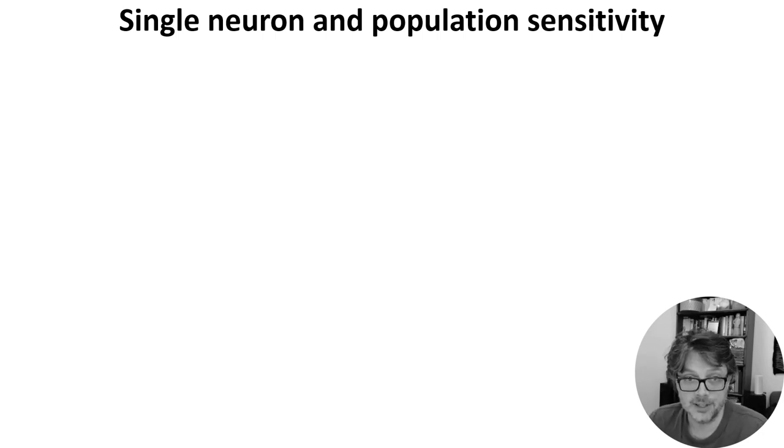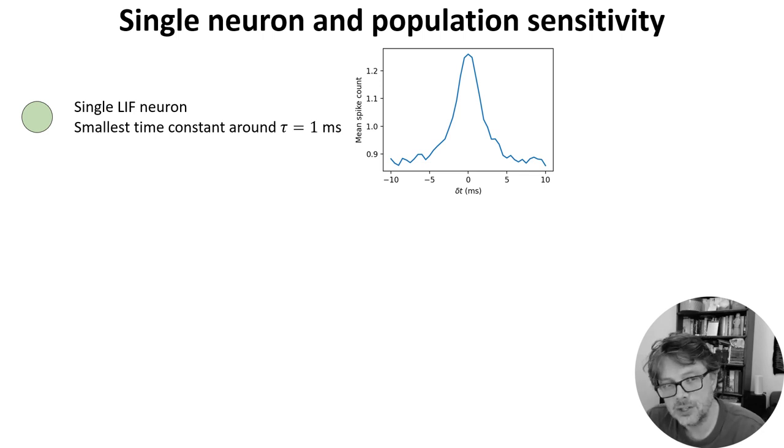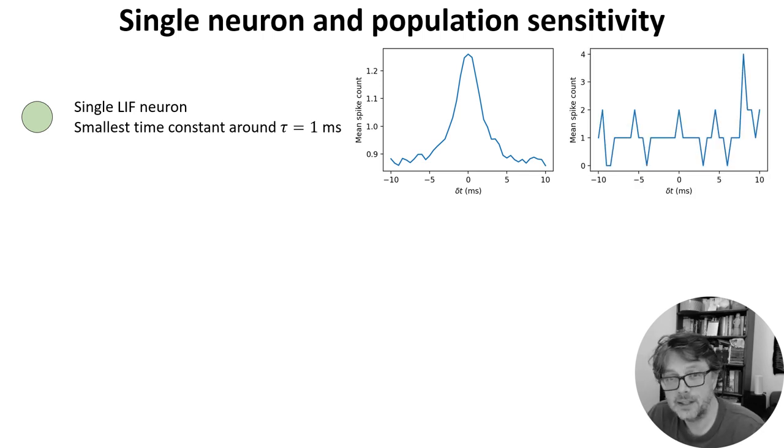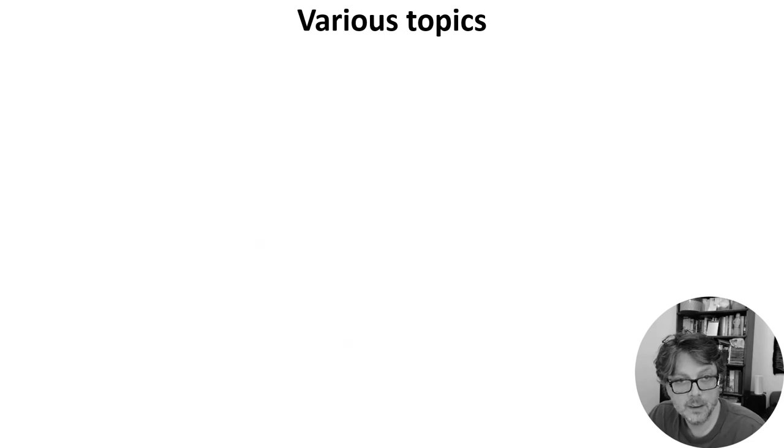OK, that's pretty much it for the sound localization example. I just wanted to finish by highlighting what we've gained from the network here. A single neuron has a time sensitivity controlled by its time constant, at the smallest around one millisecond, and it has a lot of noise. We've seen this curve, but that's an average over 10,000 repetitions. On a single trial, it looks like this. It's unlikely we could make a very accurate estimate from that. By switching to a population and using a population level decoder, we get a system that is sensitive to time differences of a few microseconds, orders of magnitude more time sensitive than the speed of the fastest units in the network.